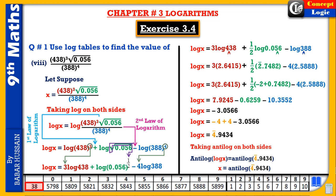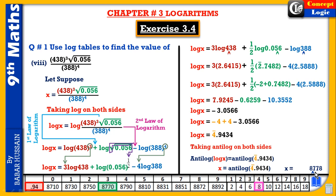Taking antilog on both sides: x = antilog(-4̄.9434). Looking up the antilog table, the value is 8770 and the difference gives 8778. The characteristic is negative 4, meaning from the point of reference (after the first digit from the left) we move four digits to the left, placing the decimal after four moves. This gives us the final answer.